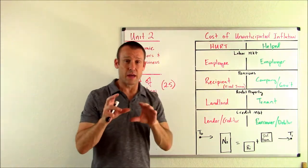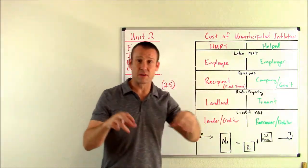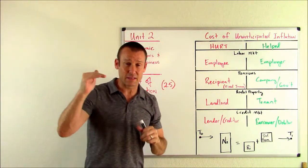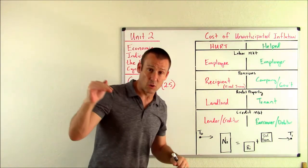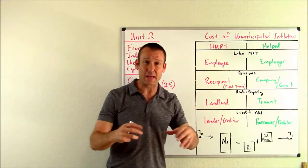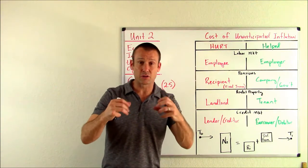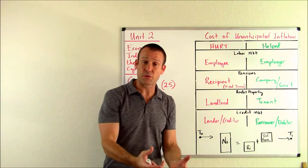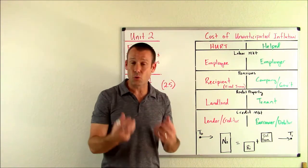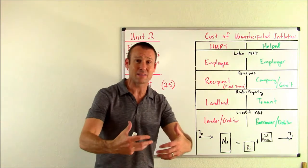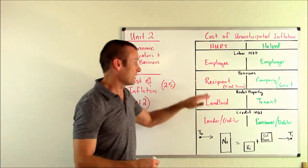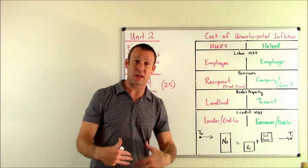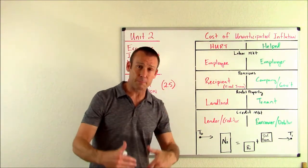Pensions: who's the payer of pensions? Companies and governments. They like that unanticipated inflation going up more because the value of the dollars they're paying is going down by more than they thought. They're going to have to pay those dollars to pension recipients, and those dollars are going to be worth less than they thought — so they benefit from paying something worth less than expected. For the recipient, it's the opposite: they're receiving dollars worth less than they thought they would be, so they're absolutely hurt.